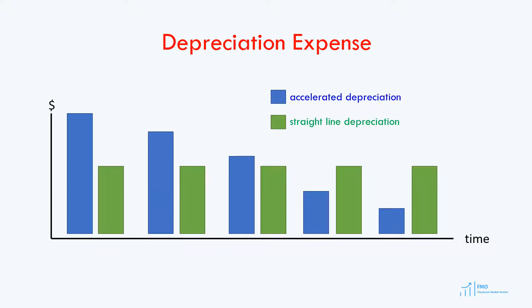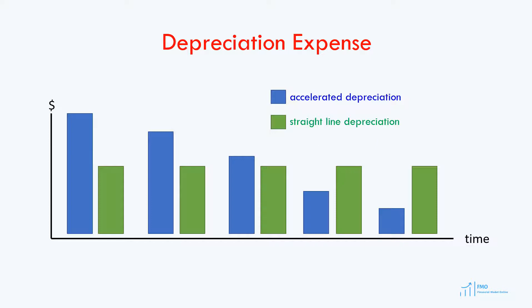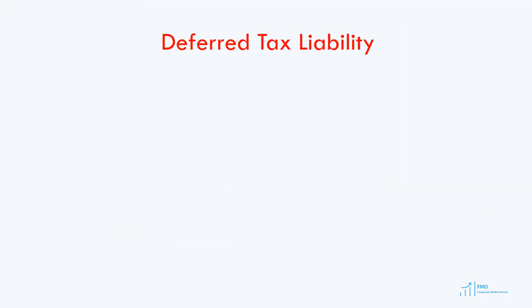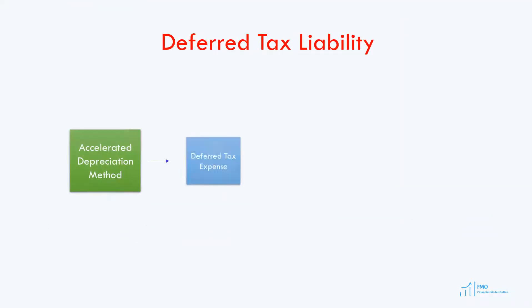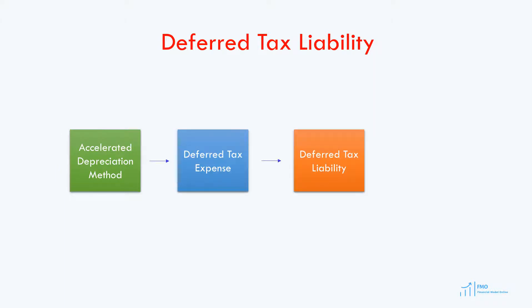However, later on, the depreciation expense for tax purposes decreases and becomes smaller than the depreciation expense under the straight-line method. Hence, the tax expenses become smaller than the cash taxes paid. Thus, the accelerated depreciation causes deferred tax expense, which is recorded as a deferred tax liability on the balance sheet, to recognize the fact that more taxes will be paid in the future.